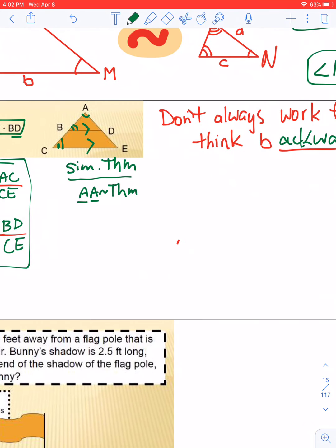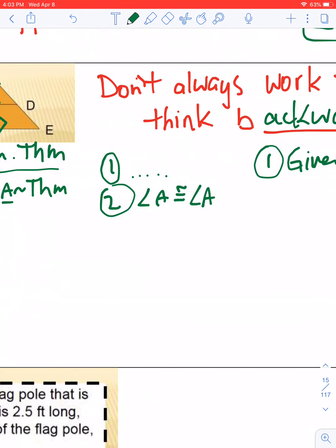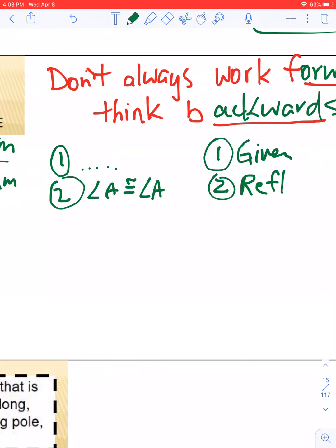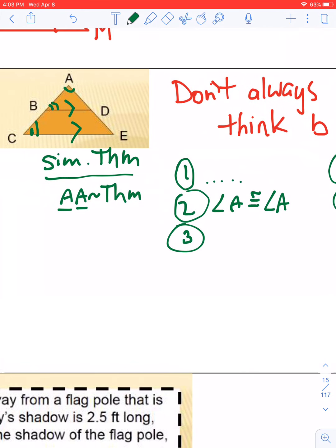Setting that up. Line one. Again, we have the given. Line two. Angle A is congruent to angle A, and that would be the reflexive property. I wonder how many times we've used that over the course of this year. Number three. So I've got one of the two angles. Now I've got to get the second angle.